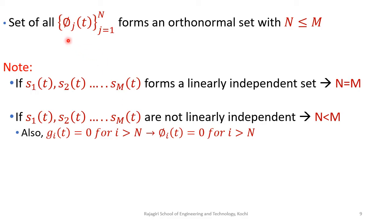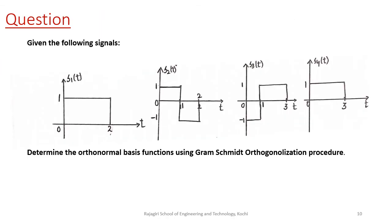Using this procedure we have determined the N orthonormal basis functions φ1(t), φ2(t), ..., φN(t), where N is always less than or equal to M. If the signals s1(t) through sM(t) form a linearly independent set, then N equals M. If they are not linearly independent, N will be less than M. In such cases gi(t) will equal 0 for i greater than N, and consequently φi(t) will also equal 0 for i greater than N.